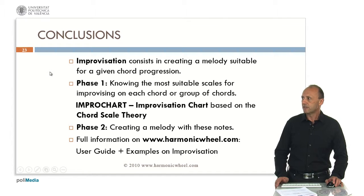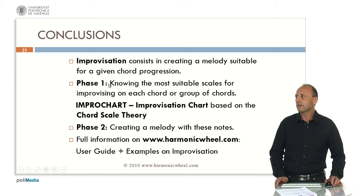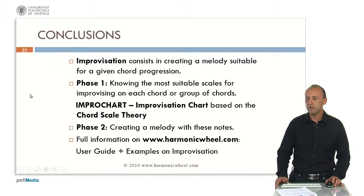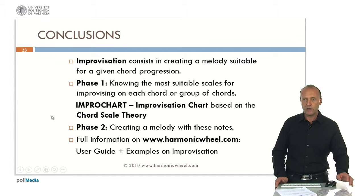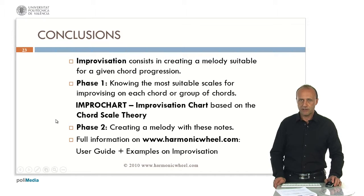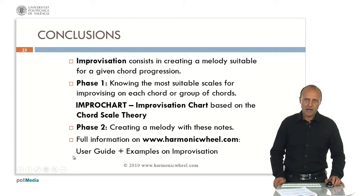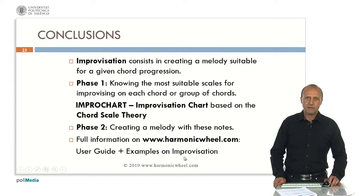Conclusions. Improvisation consists in creating a melody suitable for a given chord progression. It consists usually in two phases. Phase one is knowing the most suitable scale for improvising on each chord or group of chords. We can obtain these scales with Improchart, which is based on the chord scale theory. Phase two is to create a melody with these notes. You can find full information on the webpage harmonicwheel.com. There you will find a user guide for Improchart as well as some examples explained in full detail. Thank you very much for your attention.